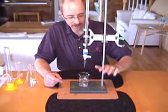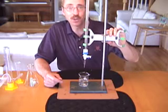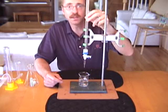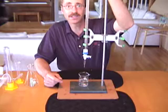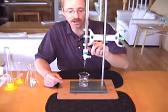This is a retort stand here. Attached to it a burette clamp to hold a 50 milliliter burette with a zero line starts up here, 50 milliliters down here.